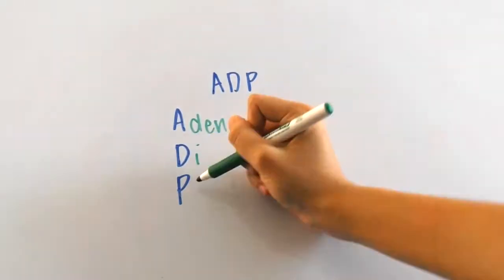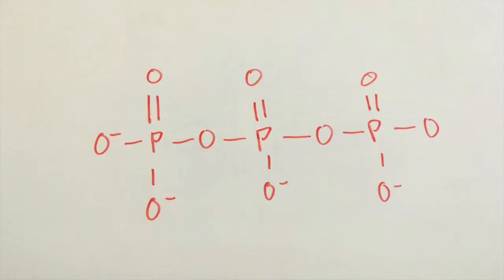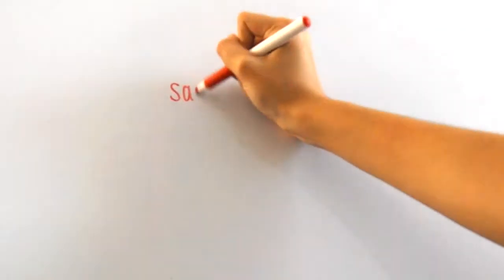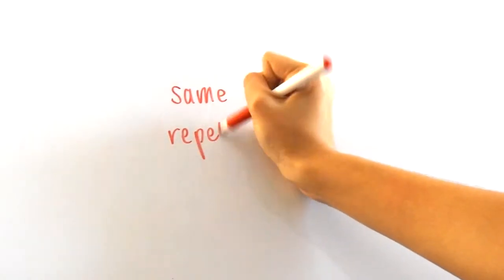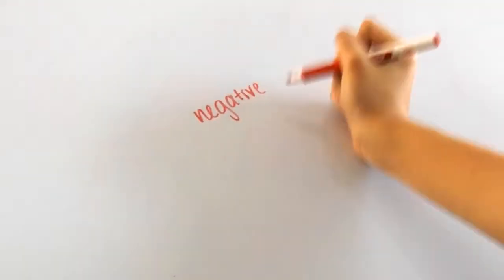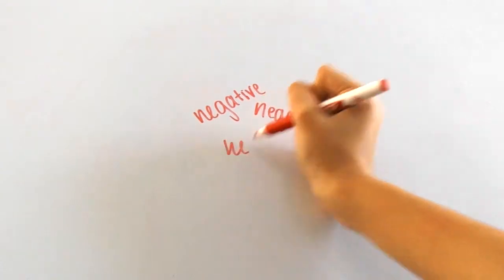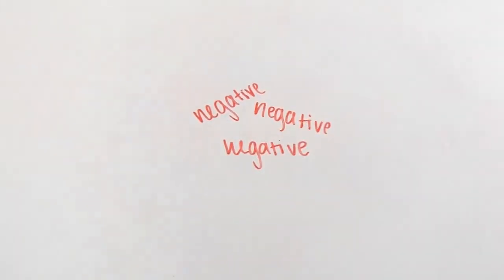Back to why ATP holds so much energy, do you see how these three phosphate groups all have a negative charge? These negative charges repel one another and it takes a whole lot of energy to keep them together like this in one ATP molecule. The energy represented when holding these groups together shows how much energy a molecule of ATP really has.